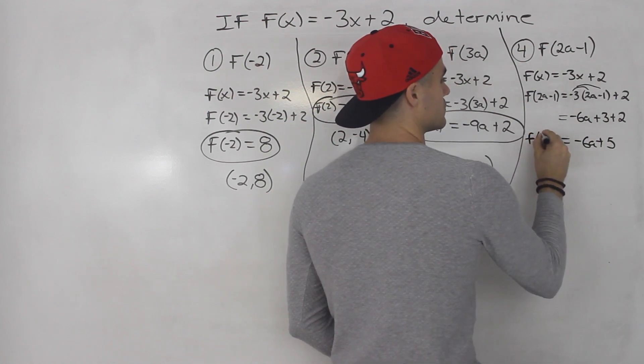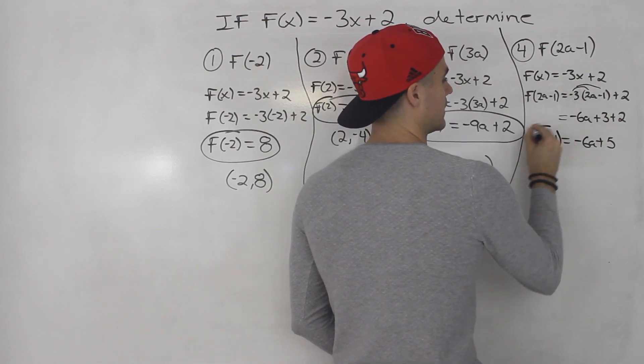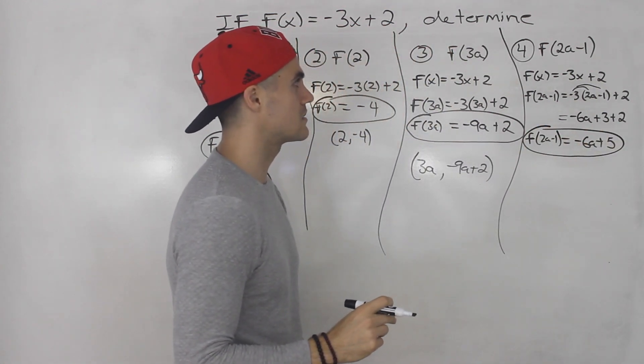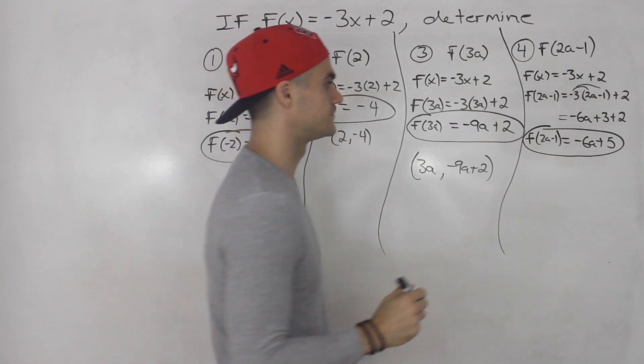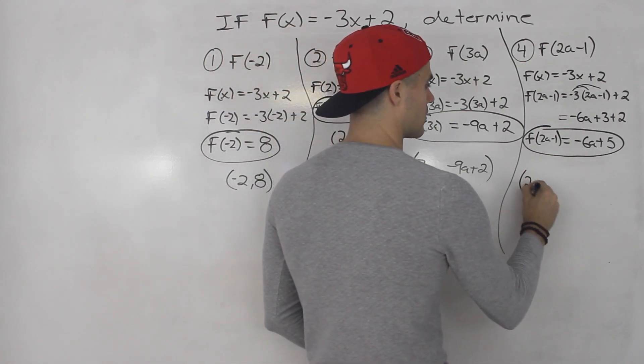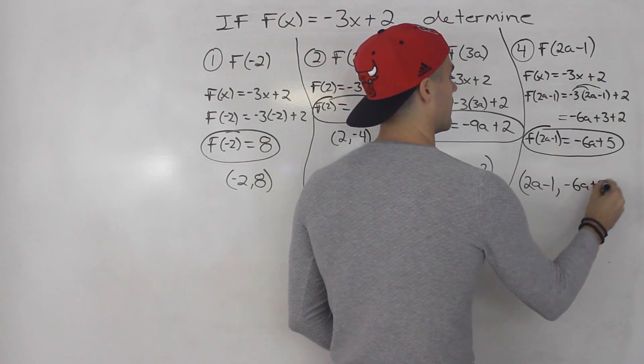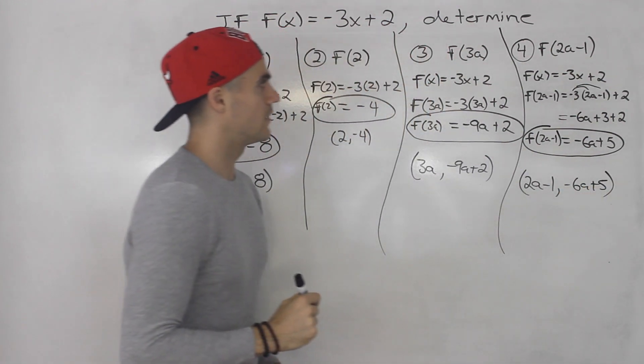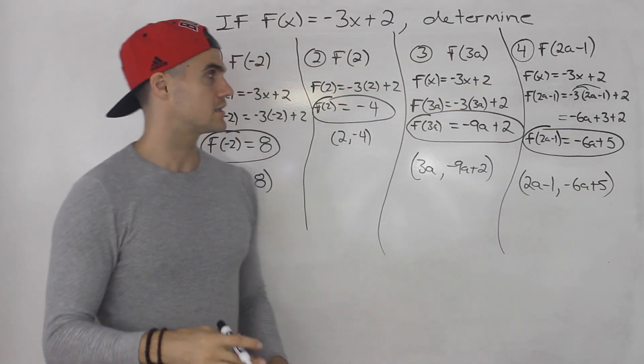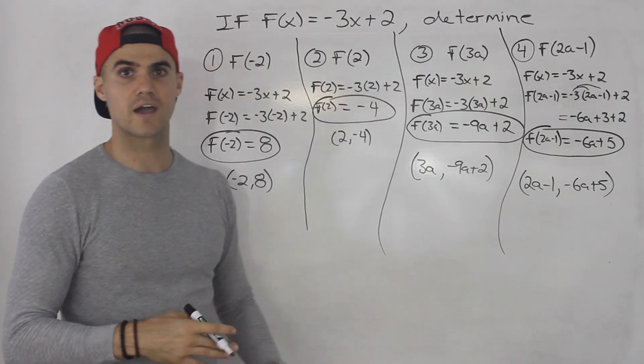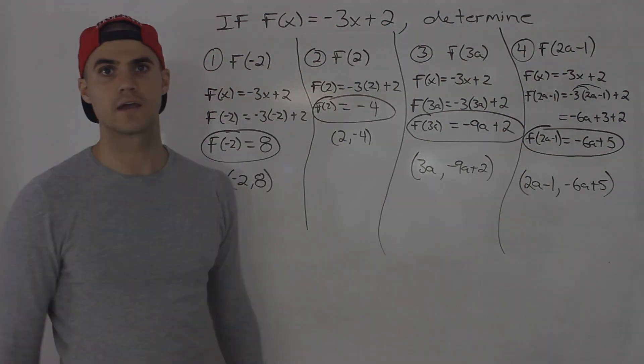So that's what f of 2a minus 1 is equal to. Negative 6a plus 5. That's the final answer. And in coordinate form, it's like this. So whenever you get questions like this, basically you're taking whatever is inside the bracket, plugging it in for x, whether it's a number or an expression.